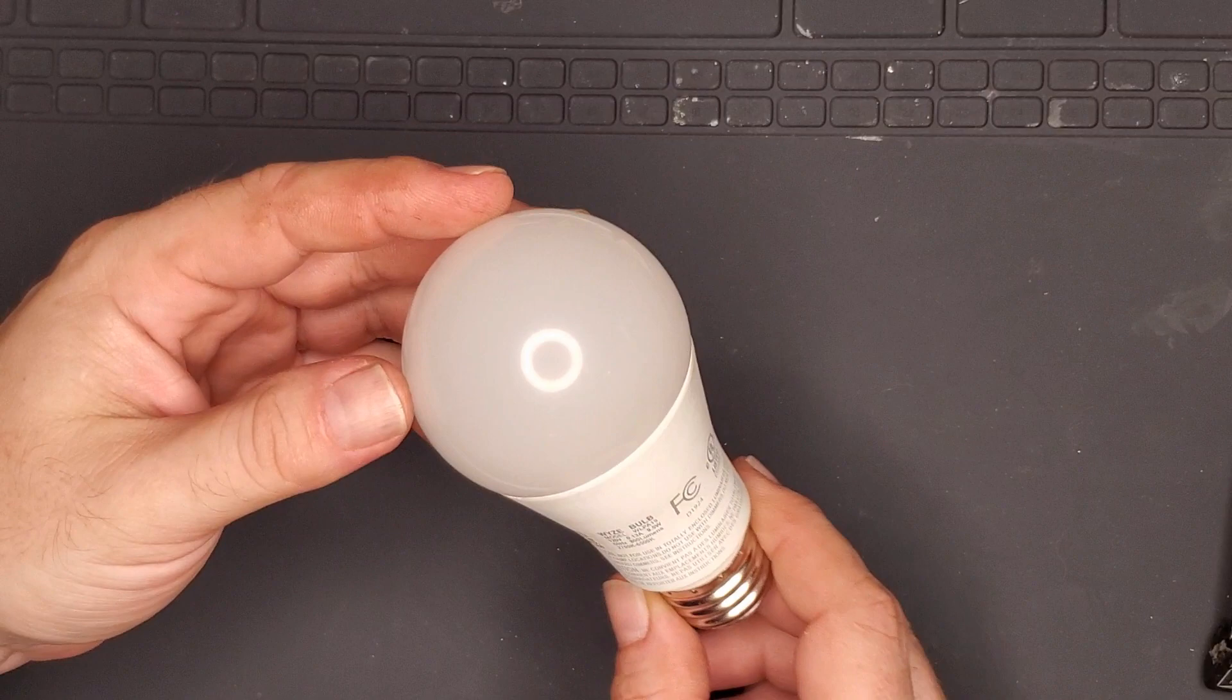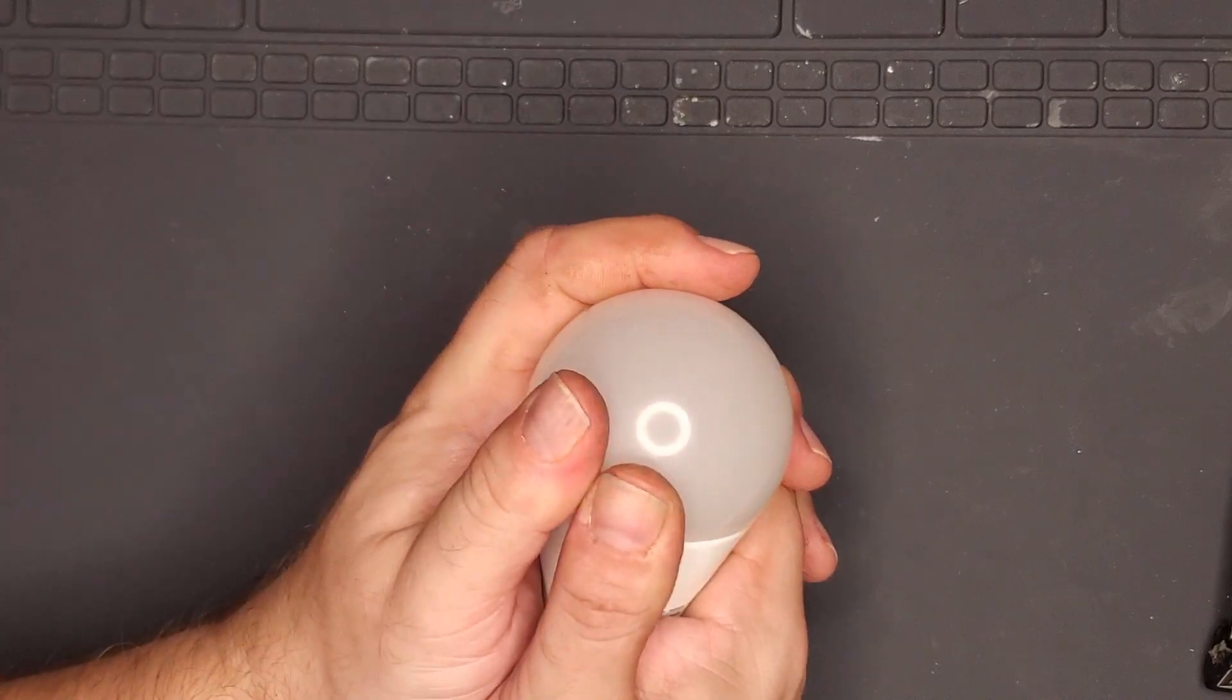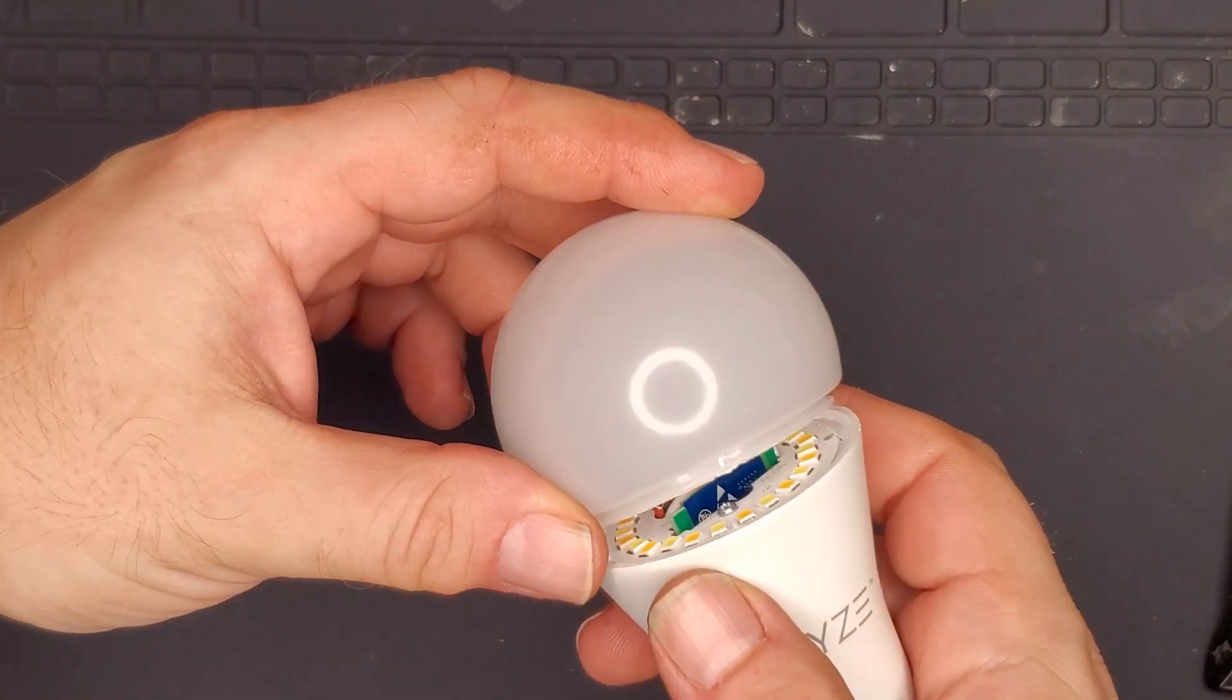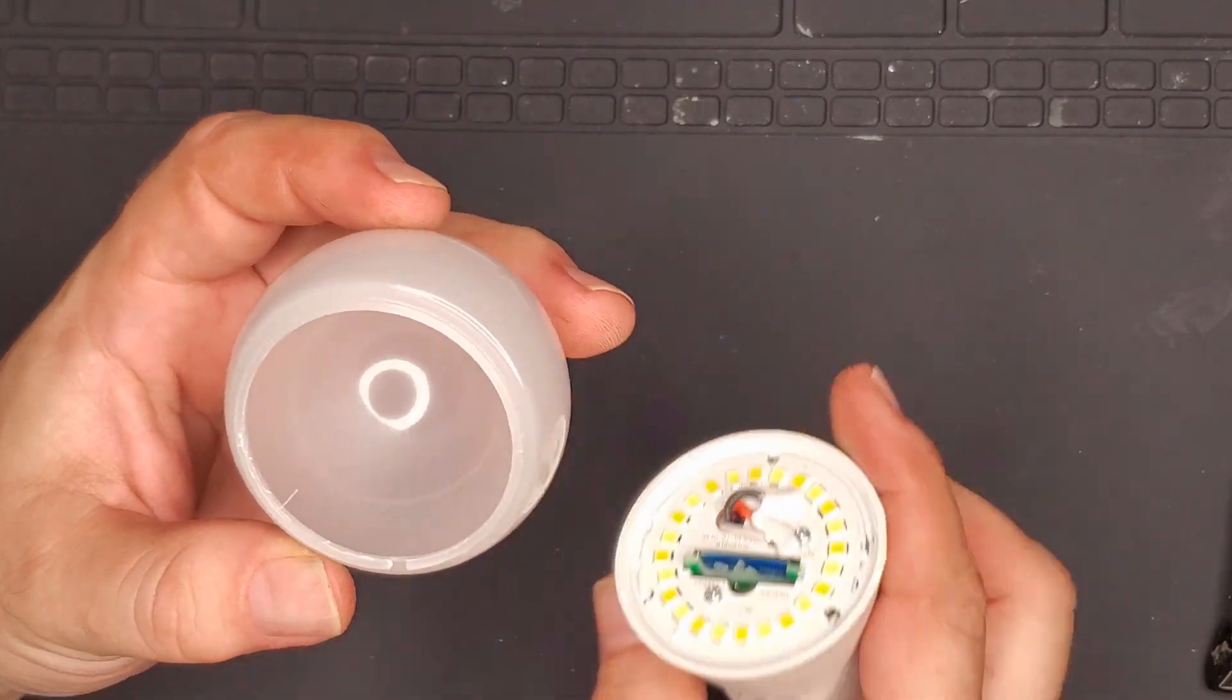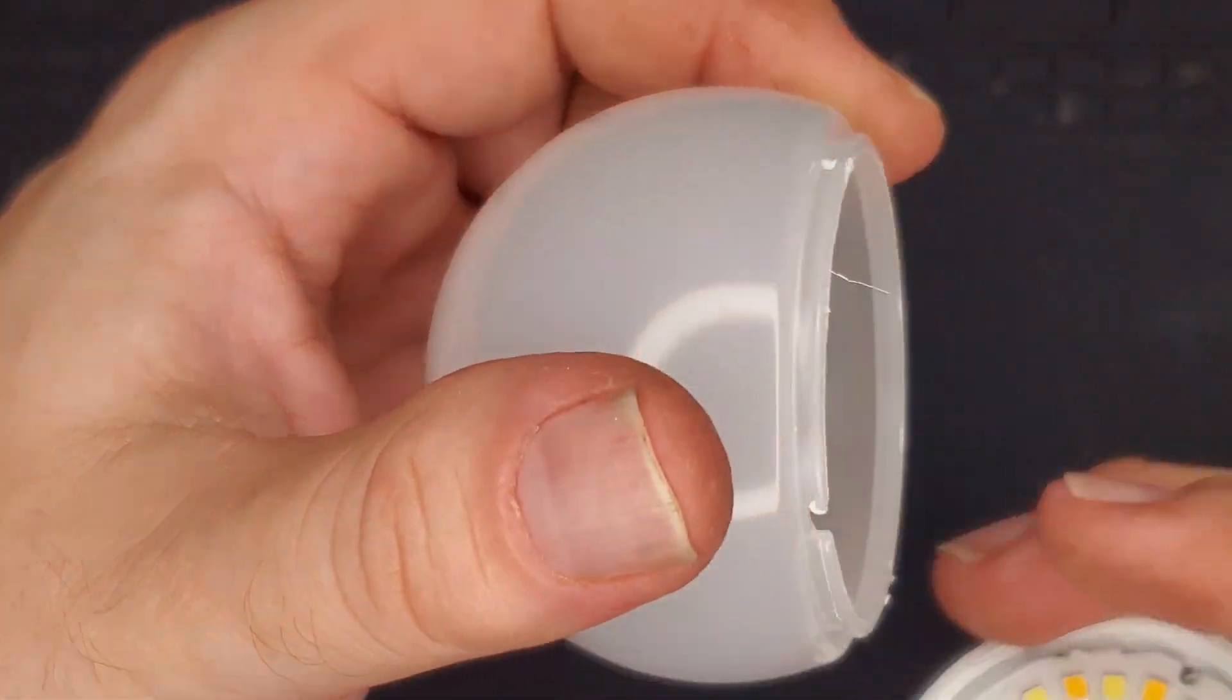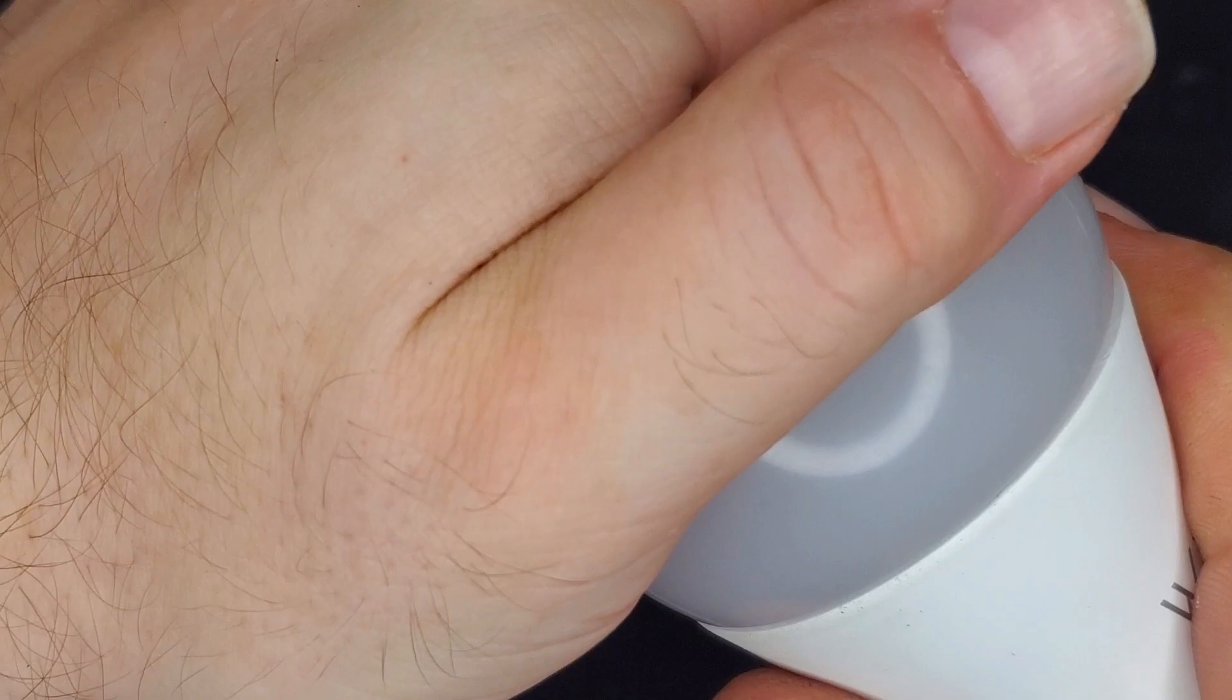And they seem like they even come apart very similar to the other LED bulbs. It feels like the top should pop off. So, let me see if I can do this without launching it across the room. There we go. Yeah, that actually is pretty nice. There's a, yeah, it doesn't look like they really used any glue. It just pops in.